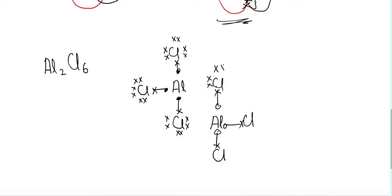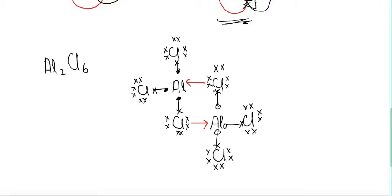Aluminum has three electrons in its outermost shell and chlorine has seven electrons. After forming a single covalent bond, three lone pairs remain on the chlorine atom. This chlorine will make a coordinate covalent bond with the aluminum. For the formation of a coordinate covalent bond, there are two conditions: one atom must have a lone pair, and the second atom must have an empty orbital in which those electrons can reside.